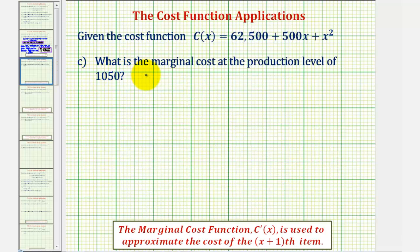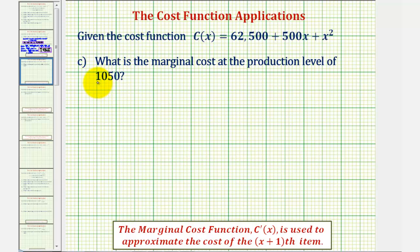Part C: what is the marginal cost at the production level of 1,050? The marginal cost function is the derivative of the cost function and is used to approximate the cost of the x plus one-th item — in this case, the cost of the next item when the production level is 1,050.